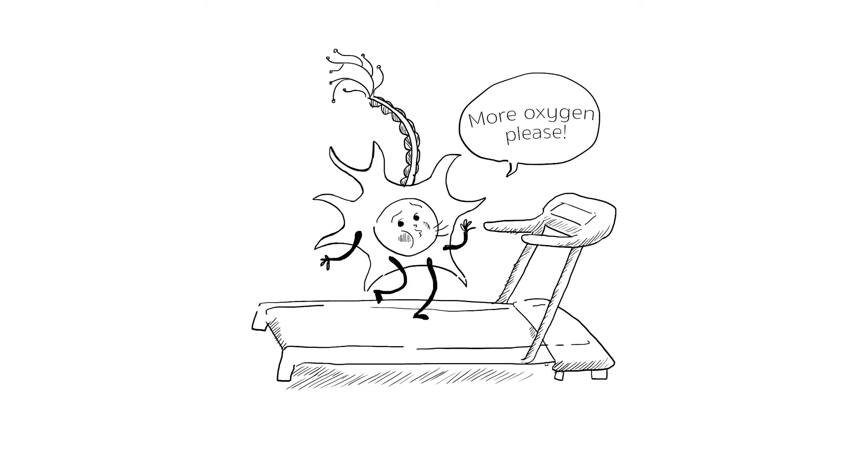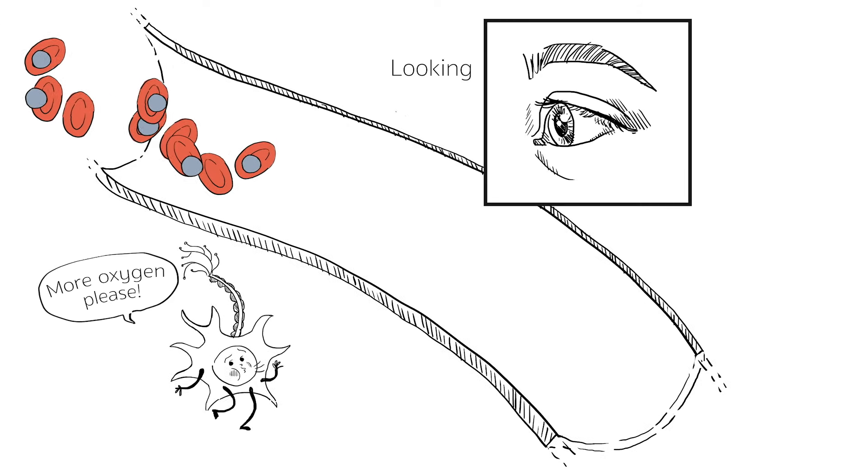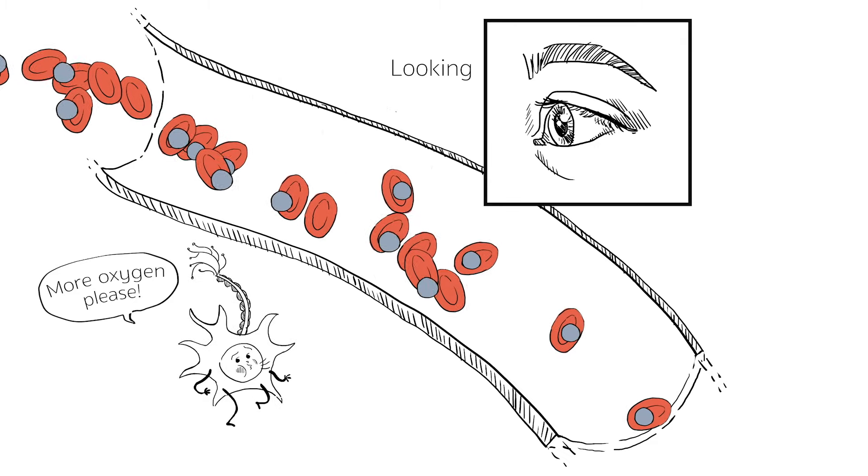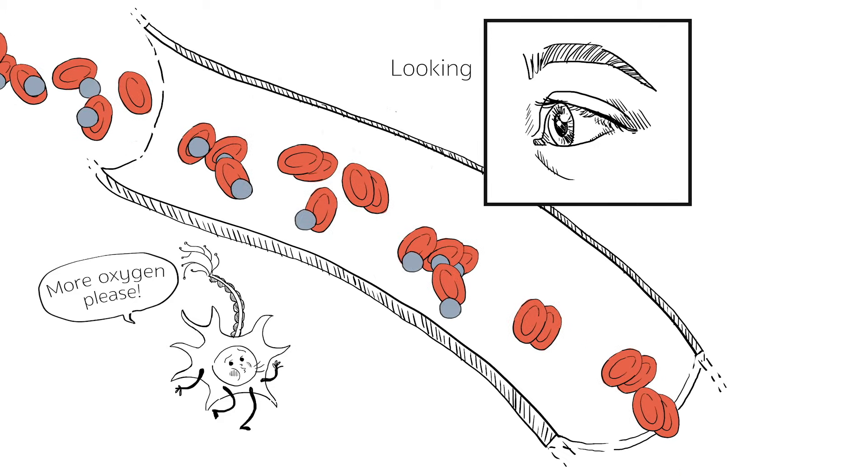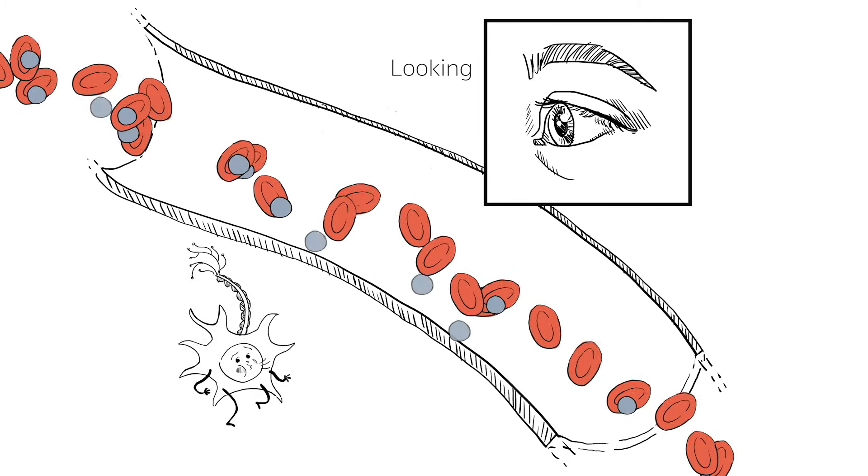The brain cells in the visual cortex demand more oxygen and the nearby blood vessels increase the amount travelling to that part of the brain. Even more is delivered than the neuron requires.